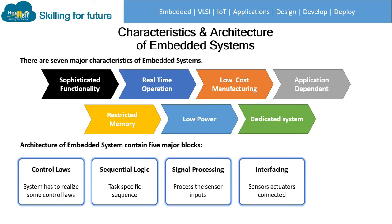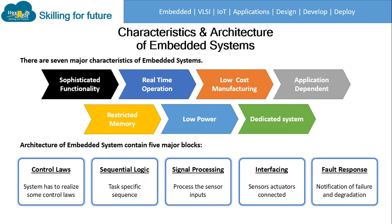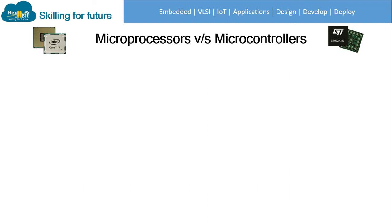The fourth block is interfacing — these are the peripherals connected to a system to receive input and give output, including sensors and actuators connected to the embedded system. The fifth block is fault response — if the system is fully operational and a failure occurs, the user should be notified of the problem or degradation in functionality. Fault response is a very important block.